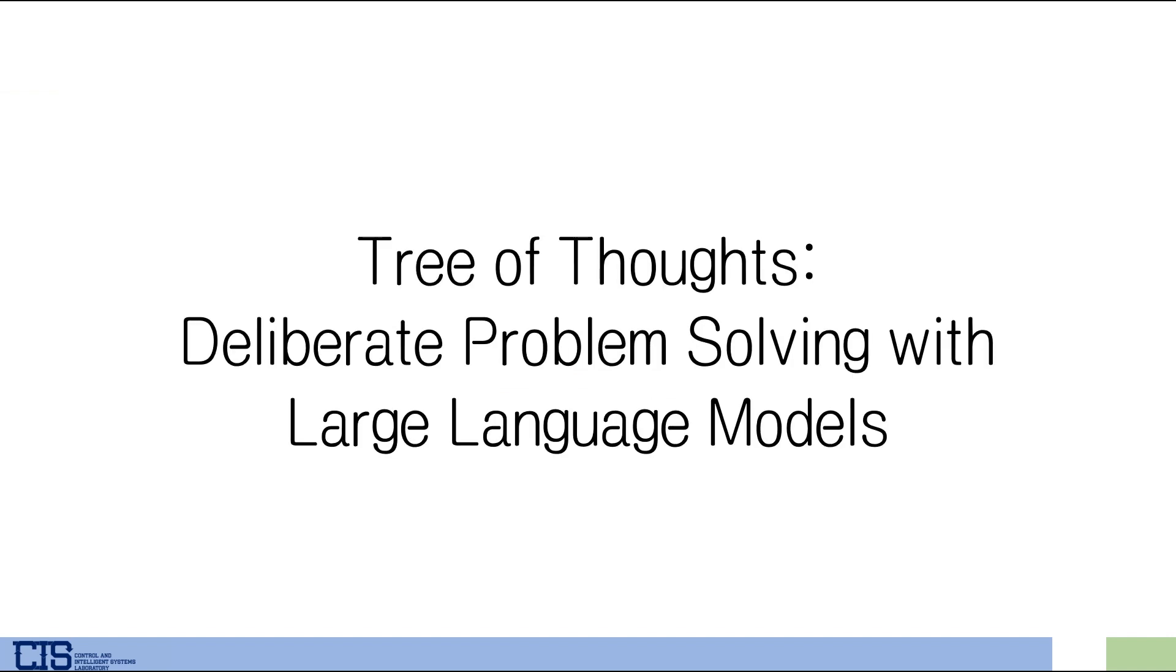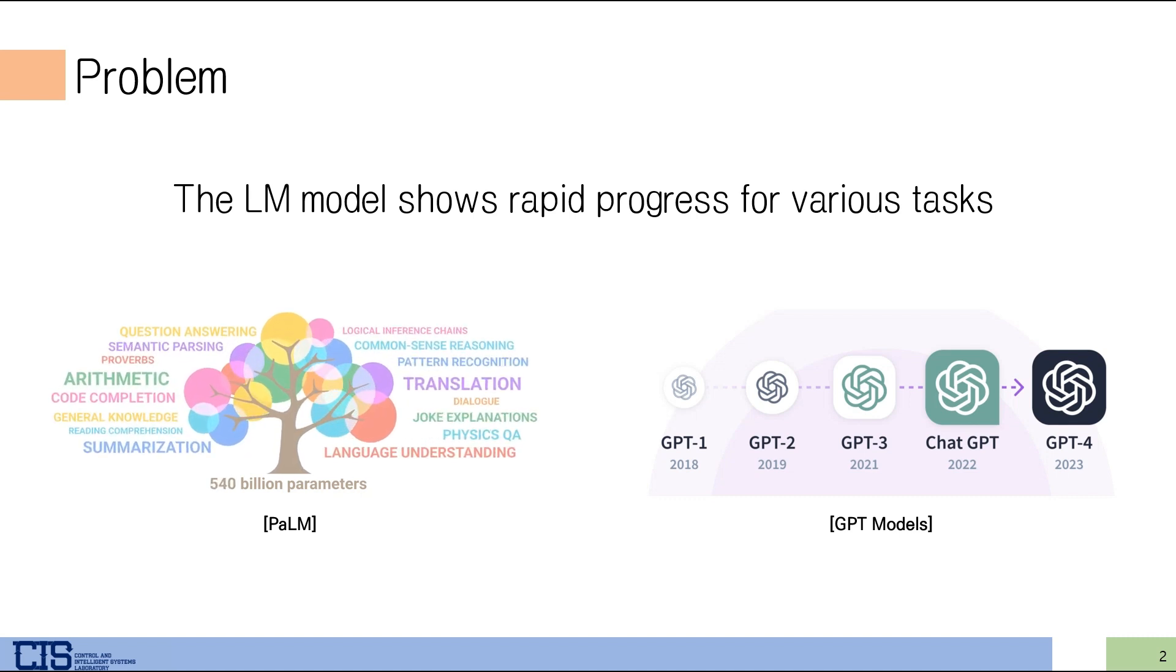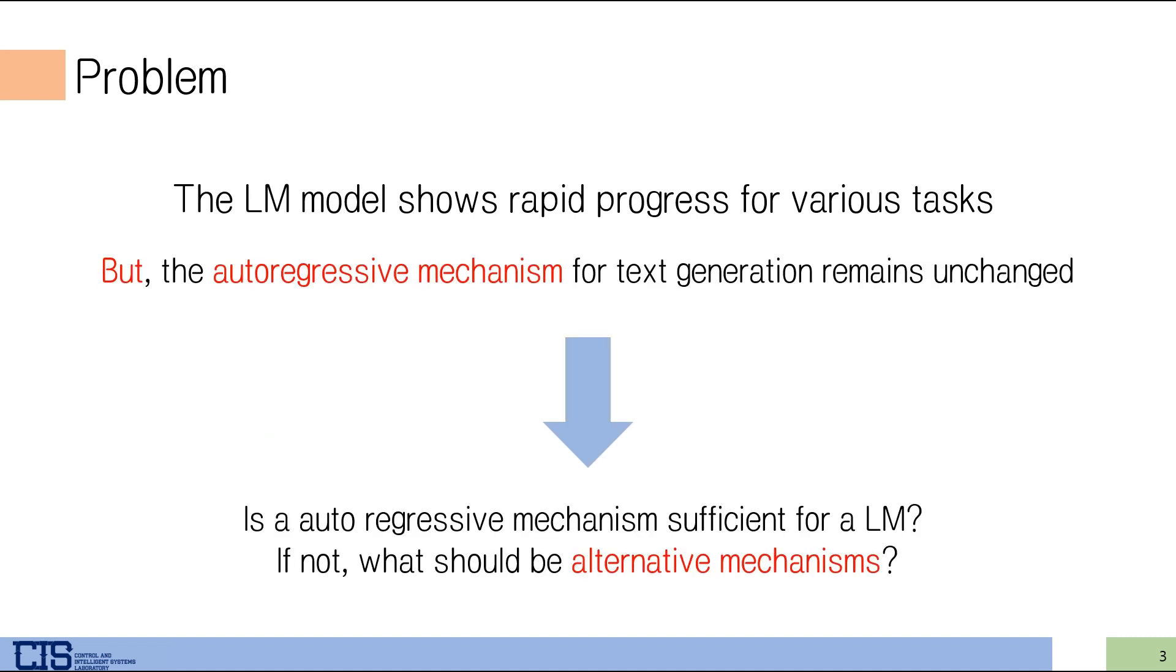Hi, I'm Hyun-Chul-Bae, and I introduce Tree of Thoughts: Deliberate Problem Solving with Large Language Models. Over the past few years, such as PALM and GPT models, the performance of large language models has grown significantly and been applied to various fields. But they still use an autoregressive mechanism for text generation and use token-level decisions one by one. In this paper, they ask, is that mechanism really sufficient for LLMs?